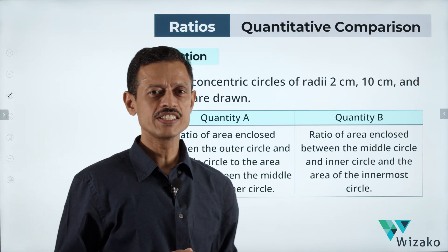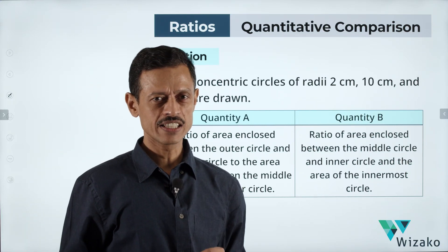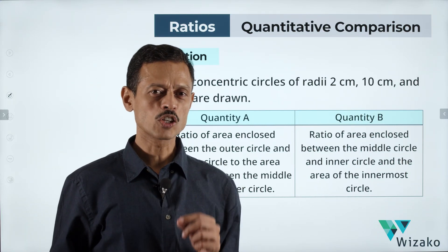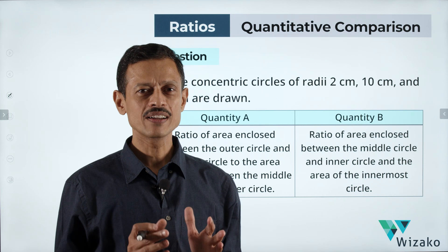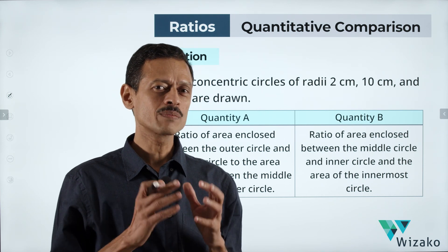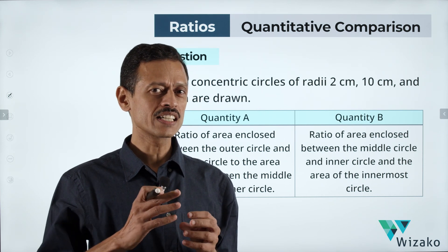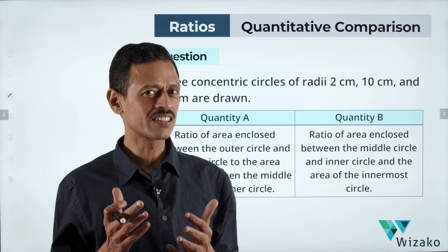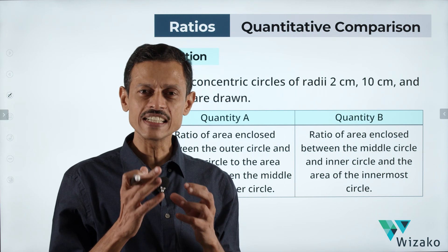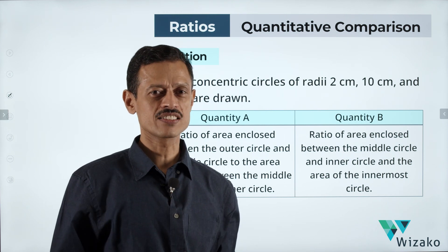This is a medium difficulty GRE quantitative reasoning question from the topic of geometry. The concept tested is concentric circles — specifically the area of different regions of concentric circles.